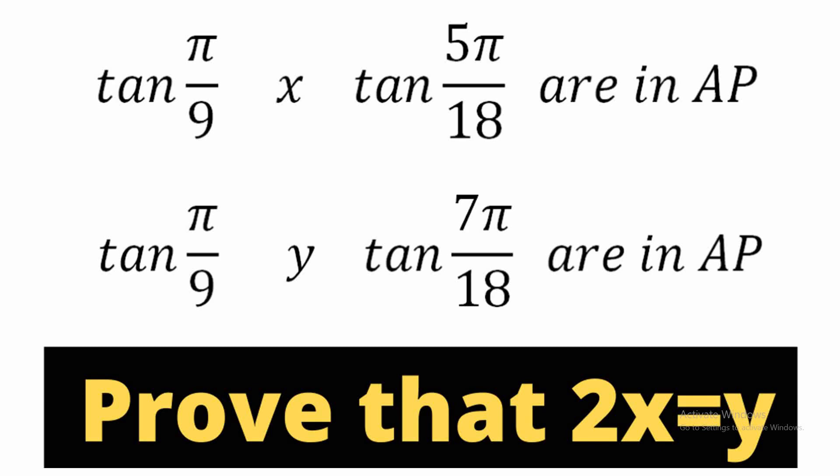In this particular question, we are given with two different conditions. The first condition says that tan(π/9), x, tan(5π/18) are in AP, and the second condition says that tan(π/9), y, tan(7π/18) are in AP. Using both these conditions, we have to prove that 2x is equal to y.